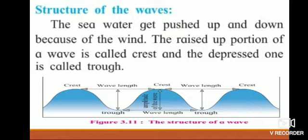The distance between two successive crests or troughs is called the wavelength. The wavelength, amplitude, and velocity of a wave depend on the velocity of the wind.